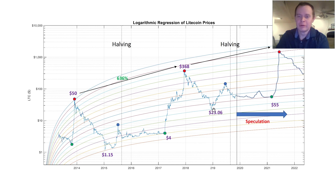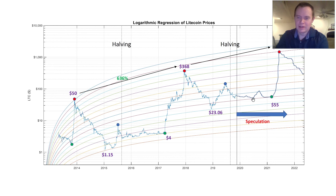You can see the same thing potentially happening over here. We came up four regression lines, came down two into the halving, we've come down that other way, and we might be oscillating in here for the next year potentially. If we were, that would basically put a Litecoin low of around $40, potentially, and then going all the way up to potentially $55 by 2021. If we were to continue this same pattern, we might see a run-up to the top of this regression line, or we might just be between these two regression lines for the next year or so.